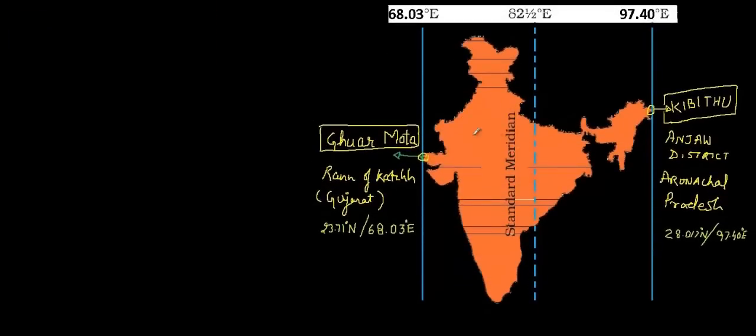This is the map of India, and if you'll see, this says 68.3 degree east and 97.4 degree east. These are the extreme points of India. This is the westernmost point, and this is the easternmost point, and this point we have here as Guhar Mota, in the Rann of Kutch Gujarat, and Kibitu, in Anjaw district, Arunachal Pradesh. These are the extreme points here that I have just circled down.